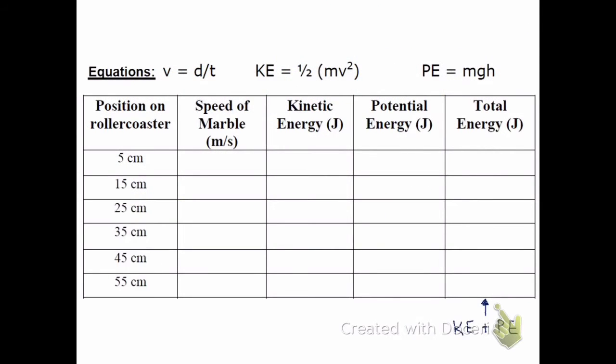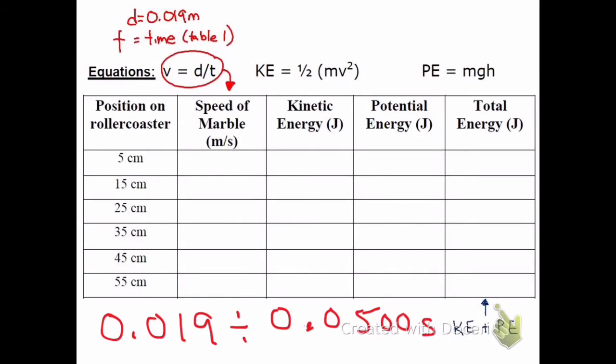So for our first calculation, we need to calculate the speed of the marble at different points on the track. Speed is distance divided by time. And in this case, the distance is 0.019 meters. And the time is the time from table 1. So what I would type into the calculator is 0.019 divided by, and my time from part 1 was 0.0500 seconds. And that works out to be 0.380 meters per second.